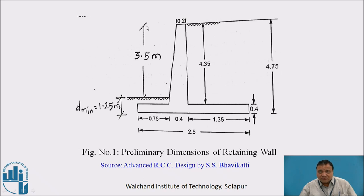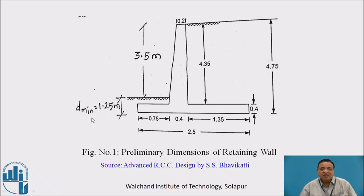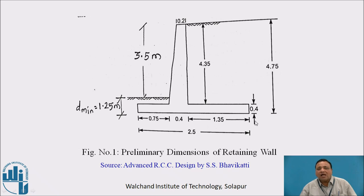The difference in level between the ground level at the downstream side and the other side of the retaining wall is 3.5 meters. First, we calculate the minimum depth of foundation, D minimum, using SBC of soil divided by density of soil multiplied by k squared, where k is the coefficient of active earth pressure. This works out to 1.25 meters. Therefore, total height from base to top is 3.5 plus 1.25, giving 4.75 meters.